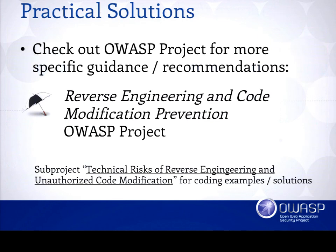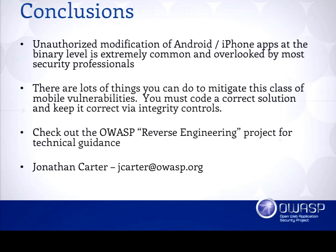I strongly recommend checking out this project — I started it back in December, it's just getting off the ground, and it goes into much more depth than we were able to cover today. It's the Reverse Engineering and Code Modification Prevention Project, directly connecting to OWASP Mobile Top 10 2014 under M10 — the lack of binary protection control. In conclusions, unauthorized modifications of Android and iPhone apps is extremely prevalent and extremely common. Often it's overlooked and people say there's nothing that can be done. That's simply not the case — you just have to be really intelligent about how you implement your control schemes, and this project will educate you on that.